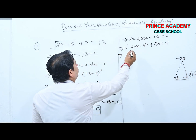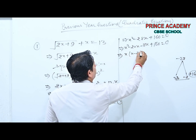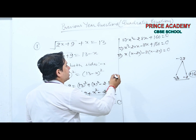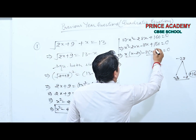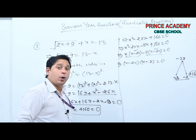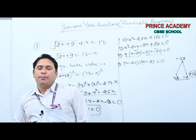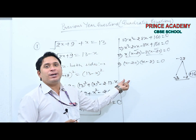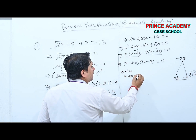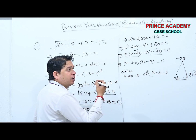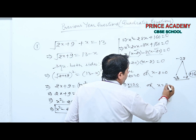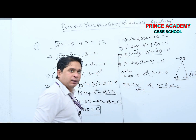Taking x common from the first two terms and −8 common from the last two: x(x−20) − 8(x−20) = 0, giving (x−20)(x−8) = 0. Therefore x = 20 or x = 8. These are the roots. The corrected statement was: √(2x+9) + x = 13.